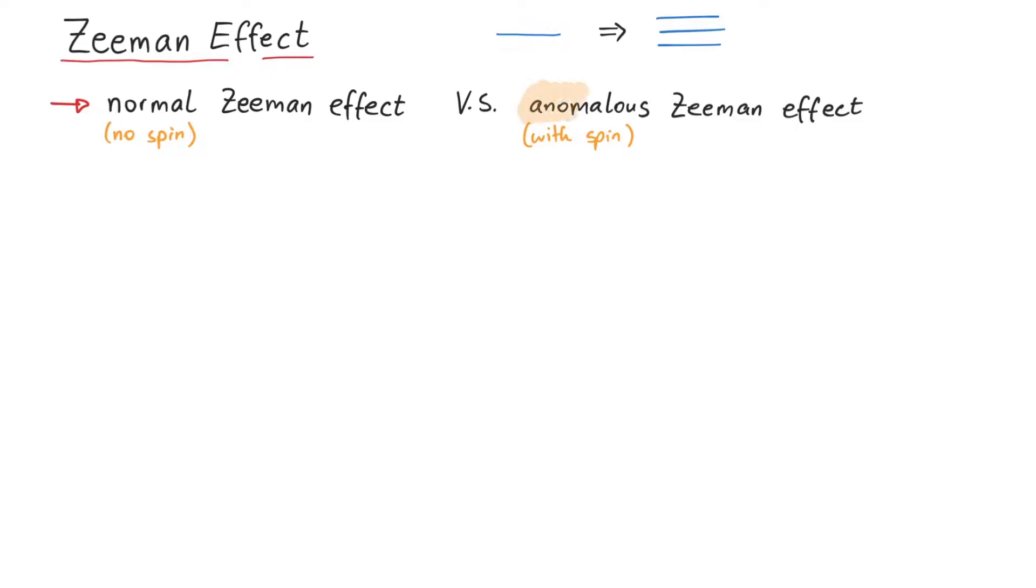The reason why it's called anomalous Zeeman effect is that the concept of spin was discovered more than 20 years after Zeeman did his experiments. At that time, he could not explain the results he was getting, so it was called anomalous.